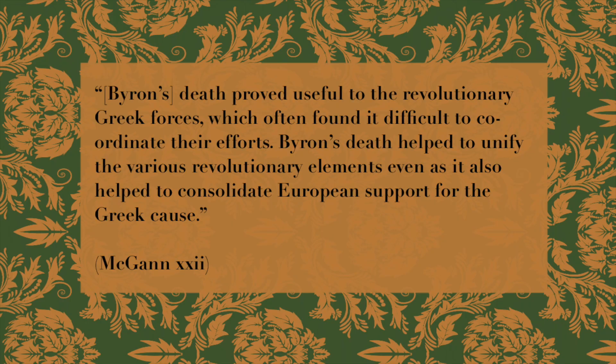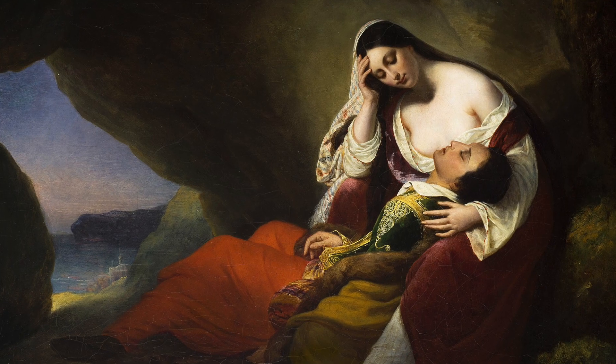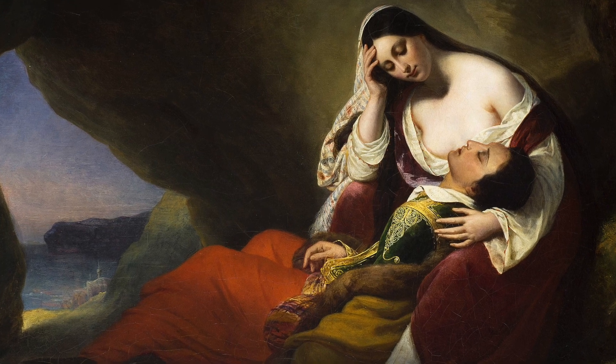Micken explains that Byron's death proved useful to the revolutionary Greek forces, which often found it difficult to coordinate their efforts. Byron's death helped to unify the various revolutionary elements even as it also helped to consolidate European support for the Greek cause. By the time of his death, Byron had published highly celebrated works such as Childe Harold's Pilgrimage, Don Juan, Manfred and The Corsair. Some of the most popular Byronic heroes of his works are Manfred, Cain and Conrad.